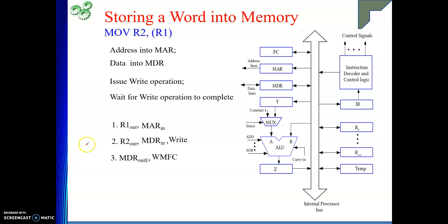Once you come out of WMFC, the data is written into memory. So the store operation takes three steps; entering step four indicates completion. This is all about storing a word into memory. These are two very important operations and we will see them many times in instruction execution. Thank you so much — if you are benefiting from my explanation, please like my videos and subscribe to my channel.